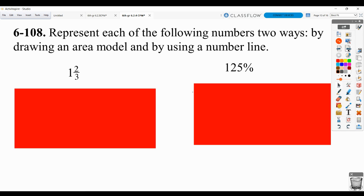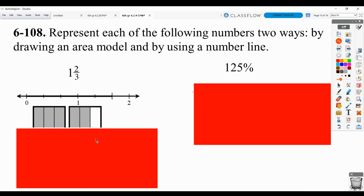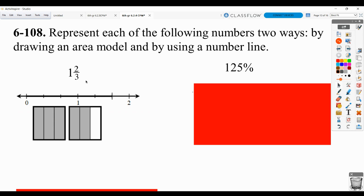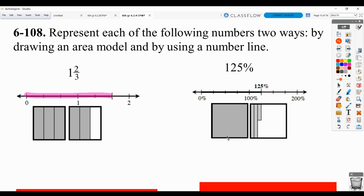Here, you have to represent them in two ways, drawing an area model and using a number line. So for 1 and 2 thirds, your area model could look something like this. One whole plus 2 thirds of another. And then for the number line, you can see that you've got 1 and 2 thirds. For 125%, you can think of that as 100 square plus 25 of another 100 square. What they did here is they showed 125% as being obviously partially between 100% and 200%, which we also know is between 1 and 2.